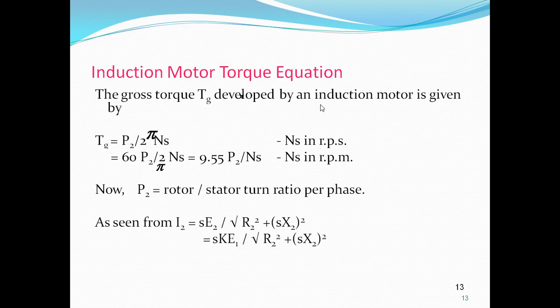The gross torque of induction motor: P2 = Tg × 2πNS, where P2 is the rotor input.